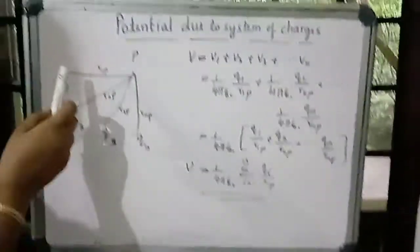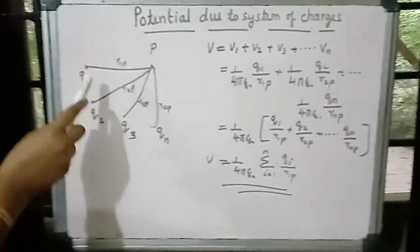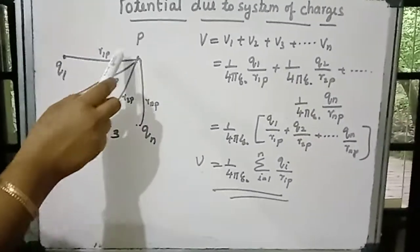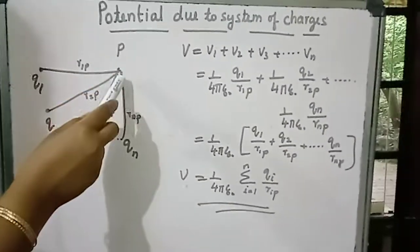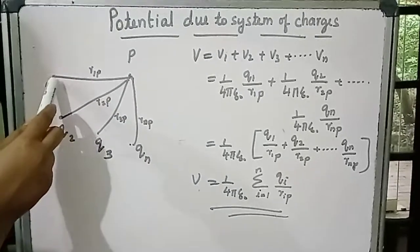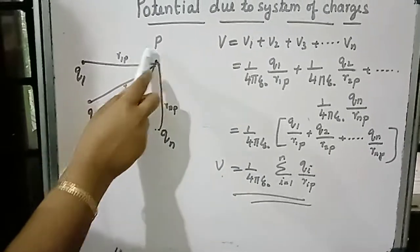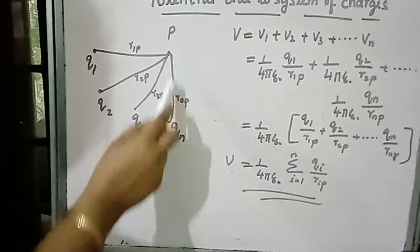Due to a system of charges, let us consider a system having charges q1, q2, q3, up to qn. We have to find out the potential at point P due to these charges. The separation between q1 and P is r1P, q2 and P is r2P, q3 and P is r3P, et cetera.